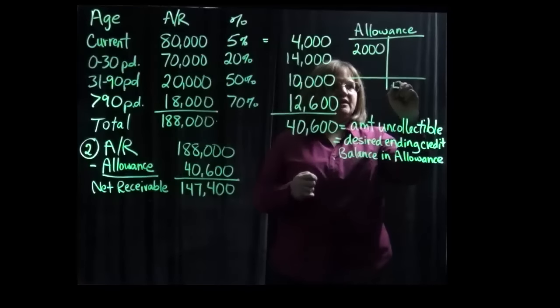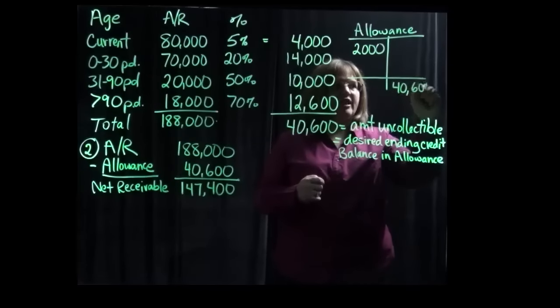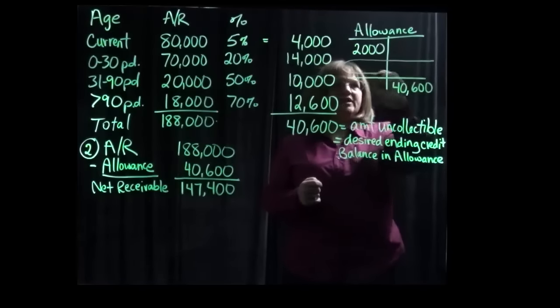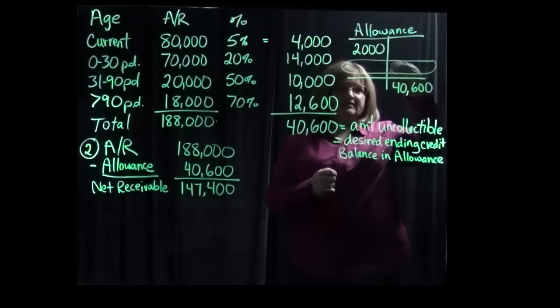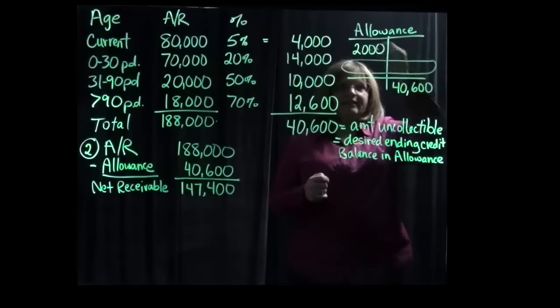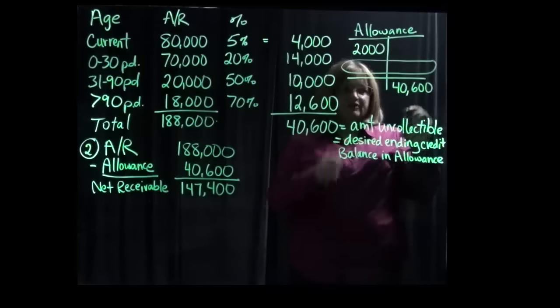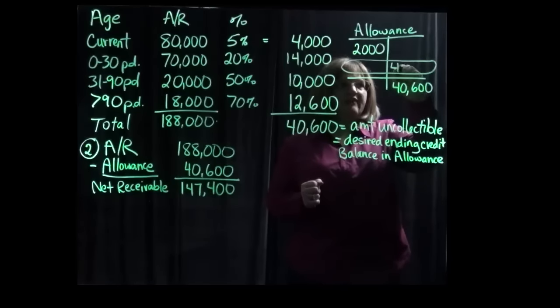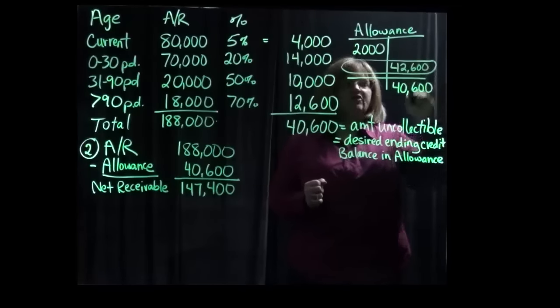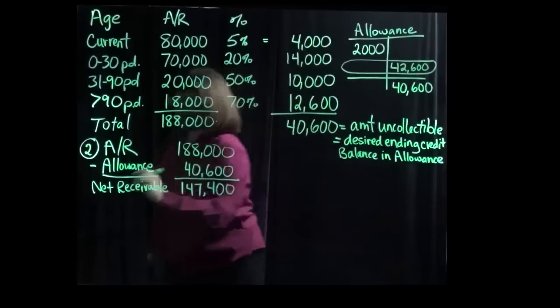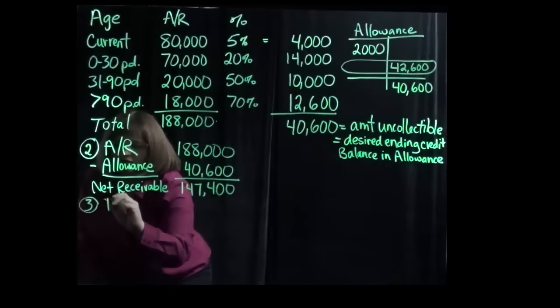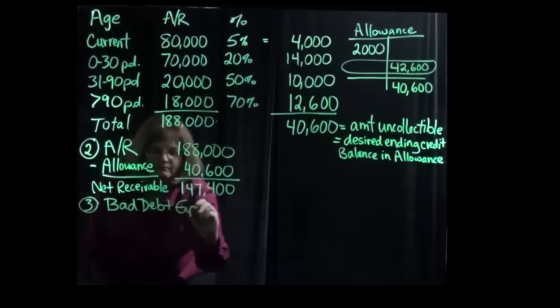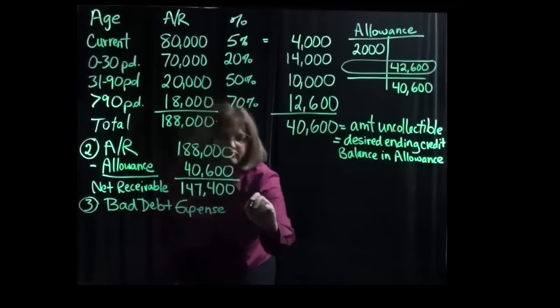As we calculated here, we want the ending balance to be $40,600 on the credit side. To get from the debit side to the credit side, that means we're going to need to make an even bigger entry on this side because the credits will need to exceed the debits by $2,000 to get to this $40,600. That means that our bad debt expense amount is going to have to be $42,600 in this case. And so our journal entry to record that would debit bad debt expense for the $42,600.